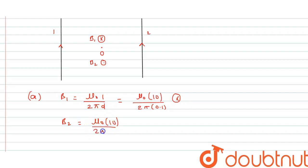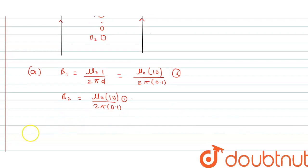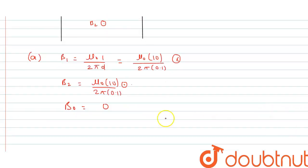The field due to wire 2 is in the outward direction. These two fields are in opposite directions but have the same magnitude, so the net magnetic field at O in Case A is B1 minus B2, which equals zero. The two vectors have equal magnitude in opposite directions, so the net is equal to zero.